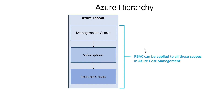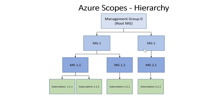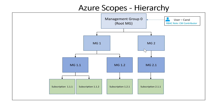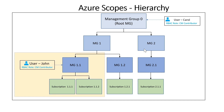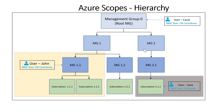Let's take a look at a sample hierarchy and access management in action. In this example, we have a multi-level management group with some subscriptions at the leaf level. Carol is a user who has been granted the Cost Management Contributor role to the root management group, so she has access to all the subscriptions in this management group hierarchy. John has been granted access to a node in the management group hierarchy and will have access to the two subscriptions under that node. Jane, on the other hand, has been granted access to view costs for a single subscription.